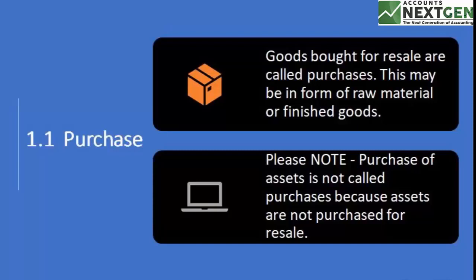When you buy goods for resale, that is basically a purchase. It can be a procurement — you're procuring something and forwarding that as a resale of that product — or you are buying some raw material, manufacturing those, and creating a new item to sell. For example, you are procuring multiple items like bicycle parts and then manufacturing a bicycle and selling it. So purchasing something is goods bought for resale, and that can be in the form of raw material or finished goods.